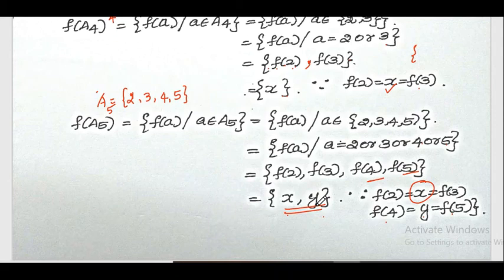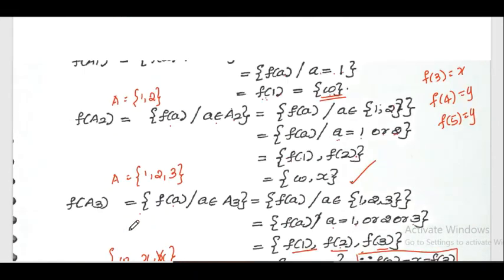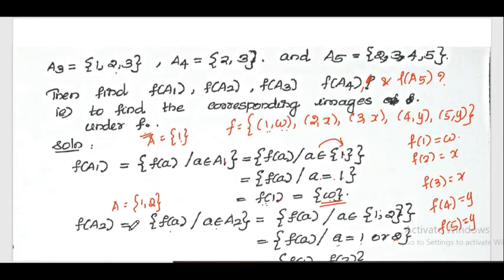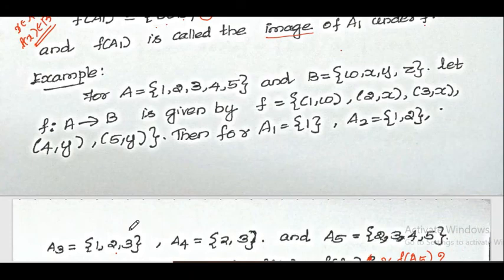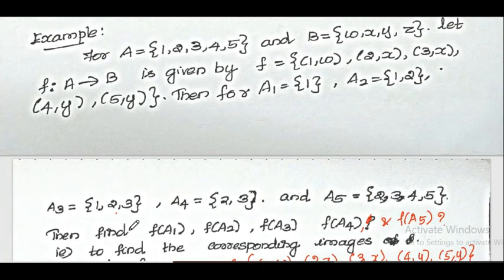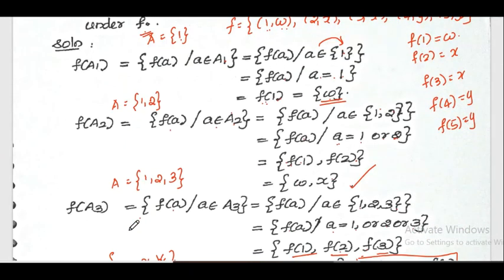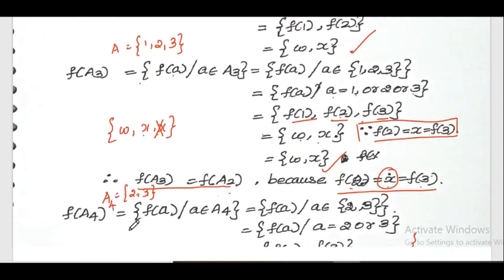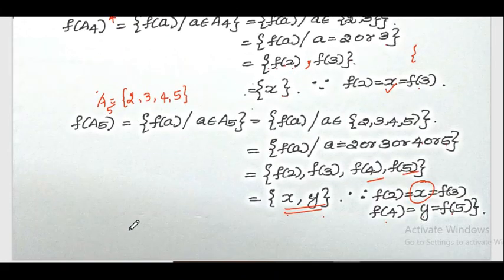So f(A1), f(A2), f(A3), f(A4), and f(A5) are the images of the subsets under the function f. This is the definition and one example explained here. Hope you could understand. If you have any doubts, please message me. Thank you.